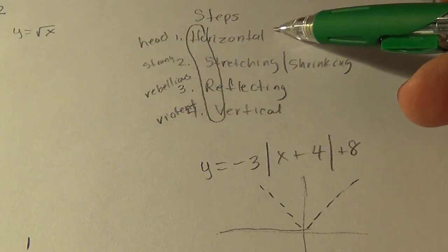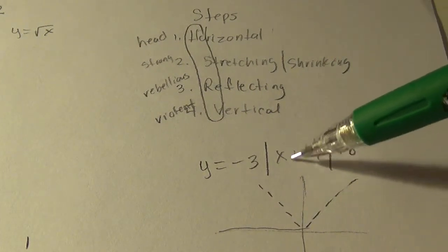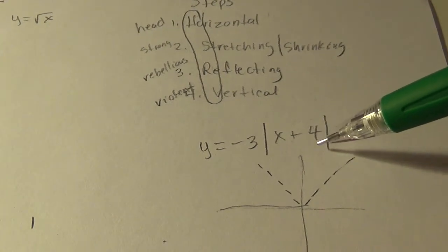And we're going to move it horizontally first. Here's the horizontal. It will go to the left four.